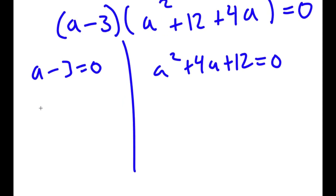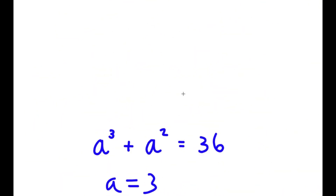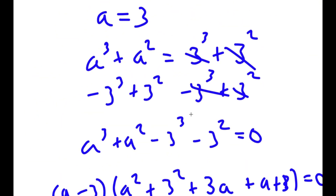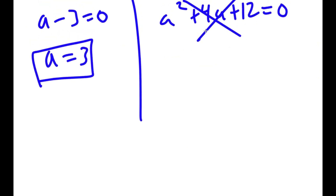For a minus 3 equals 0, a obviously equals 3, so that's one solution. For a squared plus 4a plus 12 equals 0, you have to use the quadratic formula. If you do, you get that there is no real solution because you get the square root of a negative number. So a equals 3 is our only solution.